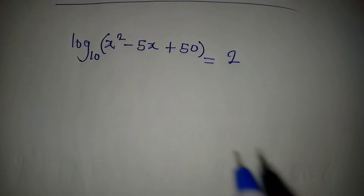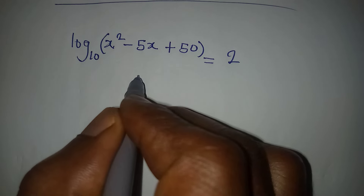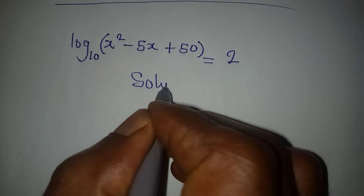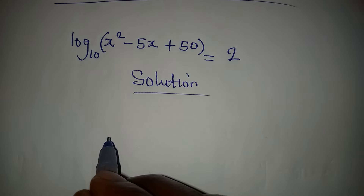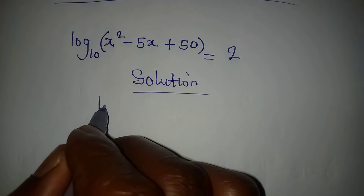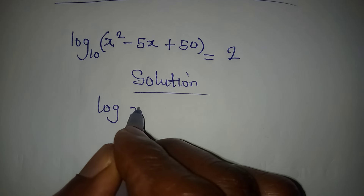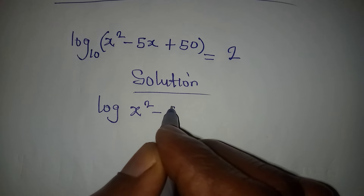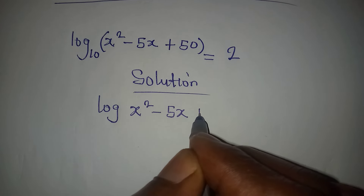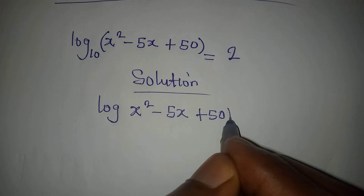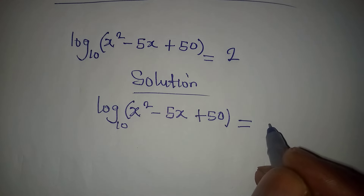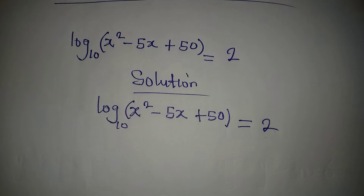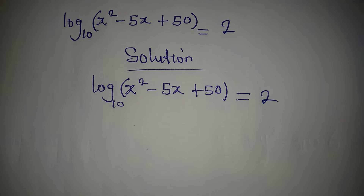Hello everyone, let's provide a solution to this problem on logarithm. We have log base 10 of (x² - 5x + 50) equal to 2.